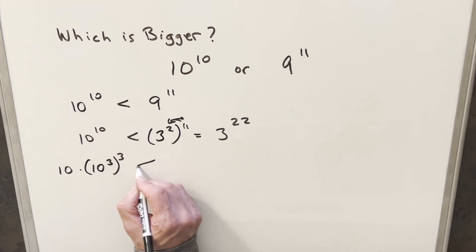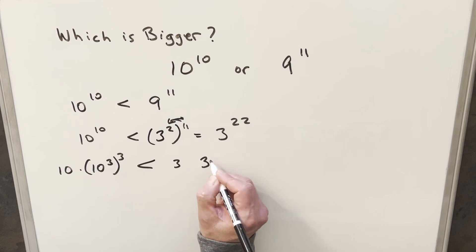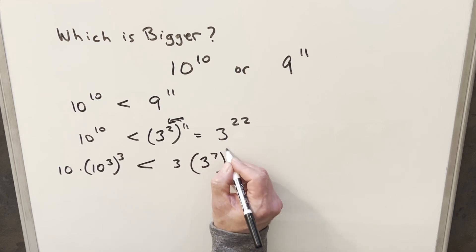And then doing the same kind of thing on the right side, I'll factor out a 3, so then we have 3 to the 21, but for 3 to the 21, I'll write it as 3 to the 7th cubed, just so we have terms that are cubed on the right and the left.